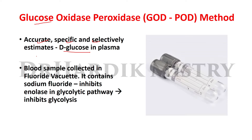For this method we have to collect a blood sample in a fluoride vacutainer. We use a fluoride vacutainer because it contains sodium fluoride, which inhibits the enolase enzyme in the glycolytic pathway, thereby inhibiting glycolysis and stabilizing the blood glucose level.